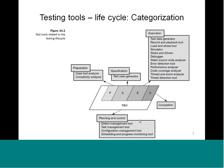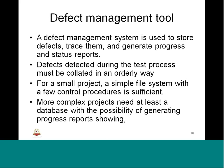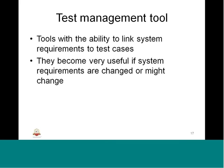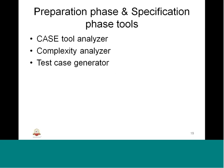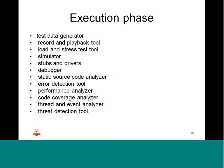Defect management depends on the size of the project, type of defect, and complexity. Databases are used to report defects and track requirements traceability. Scheduling uses tools such as MPP, TestLink, and Bugzilla, which support test management and progression. For test case preparation, CASE tool analyzers, complexity analyzers, and test case generators are used. For execution, stubs, drivers, emulators, debuggers, static code analyzers, performance analyzers, timing analyzers, and code coverage analyzers are all used, covering both white box and black box testing.